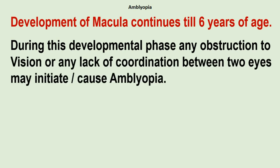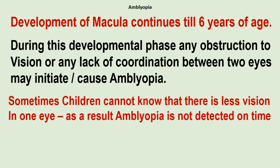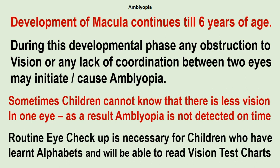Development of the macula, which is the more sensitive area of the eye, continues till six years of age. During this developmental phase, any obstruction to vision or lack of coordination between the two eyes may initiate or cause amblyopia. Sometimes children cannot tell that there is less vision in one eye. As a result, amblyopia is not detected on time, and when detected it may already be late for proper treatment and restoring vision. That is why routine eye checkups are necessary for children who have learned their alphabets and are able to read vision test charts.